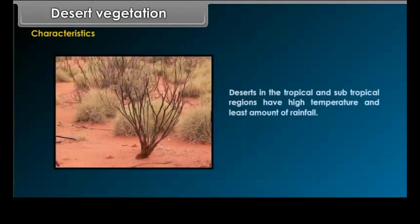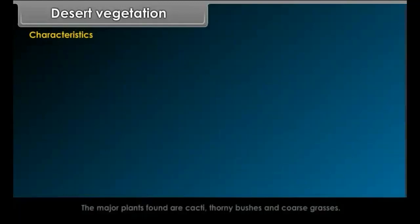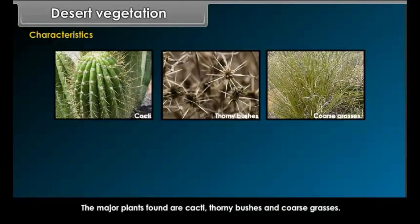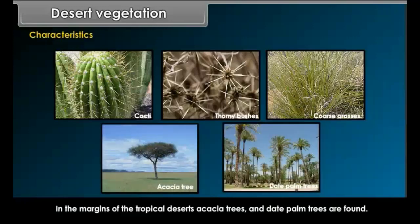Deserts in the tropical and subtropical regions have high temperature and the least amount of rainfall. Commonly, short shrubs occur in patches. The small trees of several types are characterized by thorns, thick stems, long roots and wax-coated leaves and stems. The major plants found are cacti, thorny bushes and coarse grasses. In the margins of the tropical deserts, acacia trees and date palm trees are found.